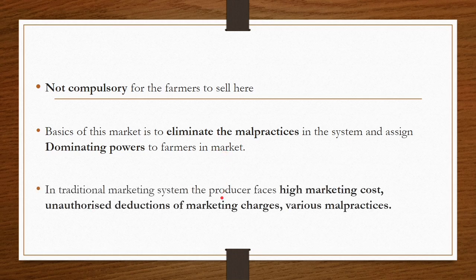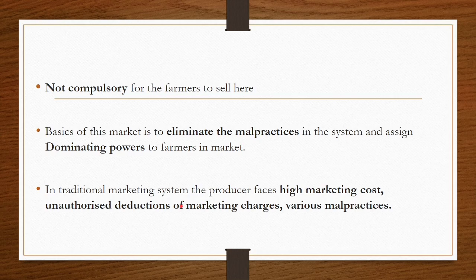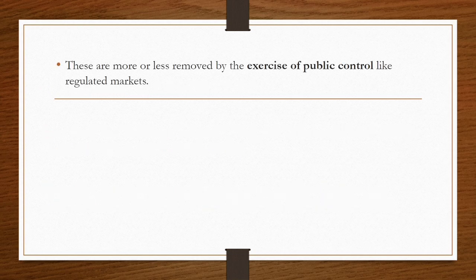In traditional markets, there are many malpractices and problems faced by the producer or farmer — such as high marketing costs, unauthorized deductions of marketing charges, and malpractices in weighing or grading. These are to be eliminated to make the market function in an efficient manner. These are more or less removed by exercising public control like regulated markets.